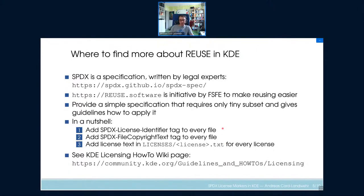In a nutshell it's quite simple: if you create a new file, you have to add a license identifier tag, a copyright tag, and for the license you are using you have to add the license into a specific subfolder. It's all documented, and it's actually really hard to do it wrong — there are even tools that check you're doing it right.